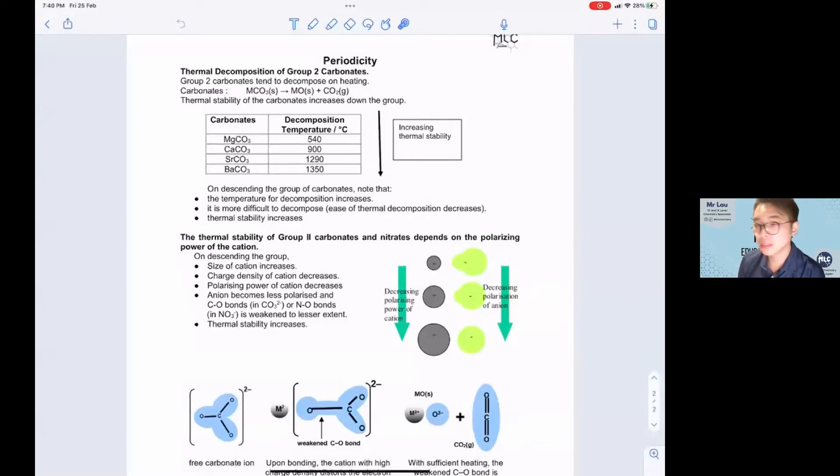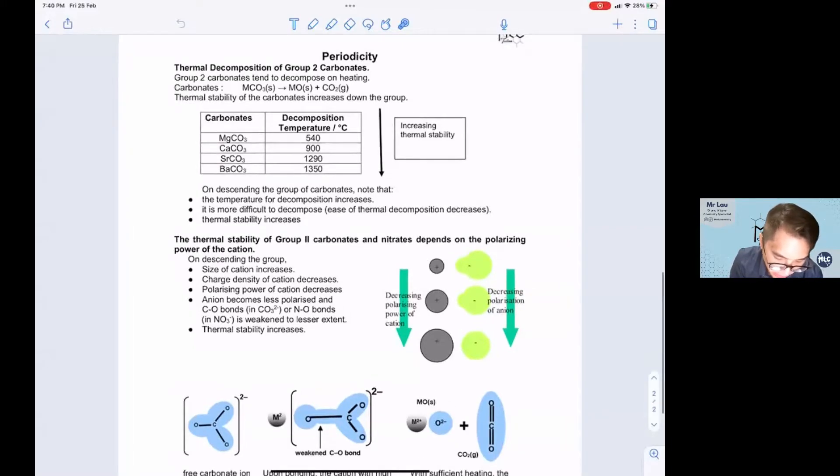Today let's look at the thermal decomposition of group 2 carbonates and group 2 nitrates. You realize that down the group, the decomposition temperature increases, which means it requires more energy to decompose the group 2 carbonate or nitrate. This means it is getting more and more thermally stable.